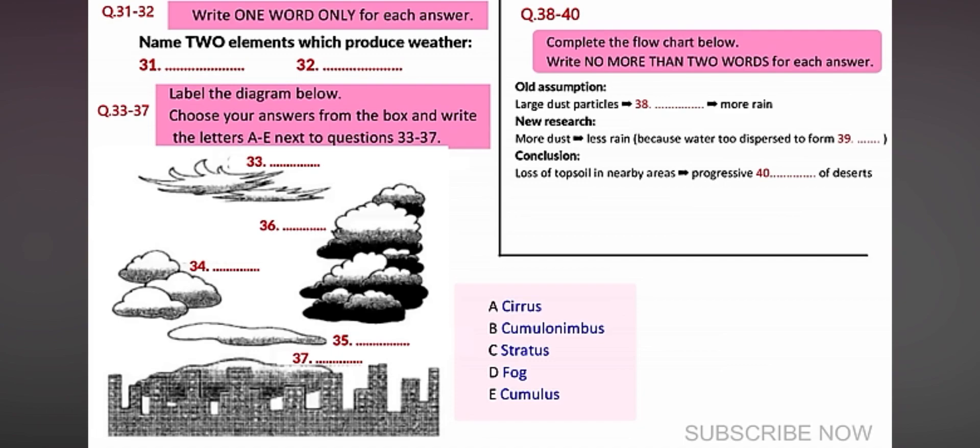The high altitude cirrus cloud, on the other hand, is mostly made of ice crystals and appears wispy and thin, almost hair-like, in fact. That's where they get their name, from the word cirro, meaning wisp of hair. They are generally fair weather clouds.